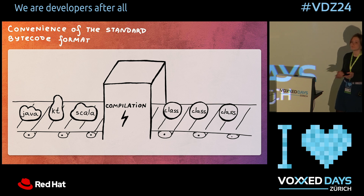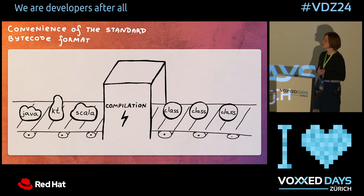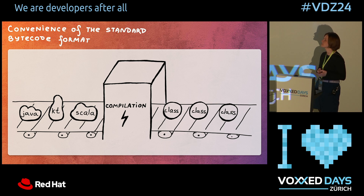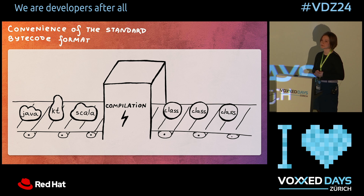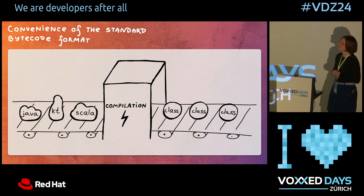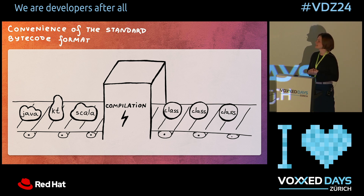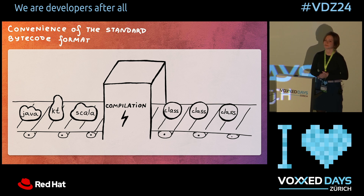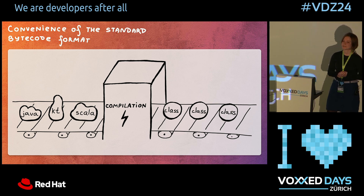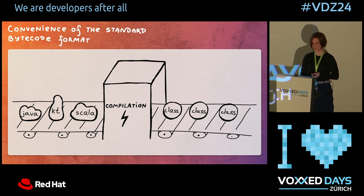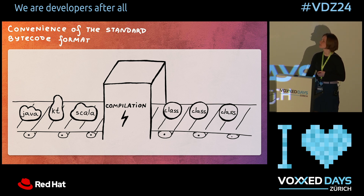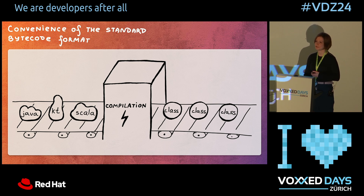When you write a program in any language on top of the JVM — like Java, Kotlin, Scala — they get compiled with their own compilers and translated into a format that is very standard for all of them. This format becomes bytecode that is written into a class file.